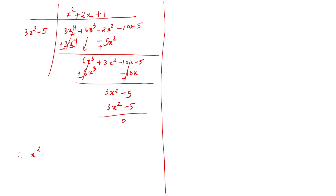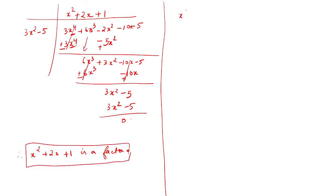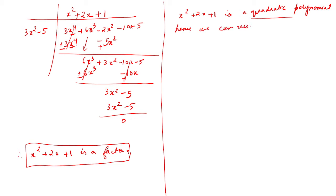So the quotient is x squared plus 2x plus 1. This is a quadratic polynomial. We are asked to find the zeros, so we can use splitting the middle terms on x squared plus 2x plus 1. The coefficient of x squared is 1 and the constant is 1, so 1 times 1 equals 1. We need two numbers that add to 2 and multiply to 1.